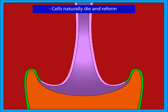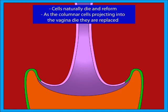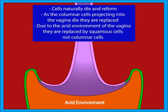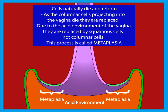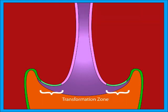Cells naturally die and reform. As the columnar cells projecting into the vagina die, they are replaced. But due to the acid environment of the vagina, they are replaced by squamous cells, not columnar cells. This process is called metaplasia, and it forms something called the transformation zone.